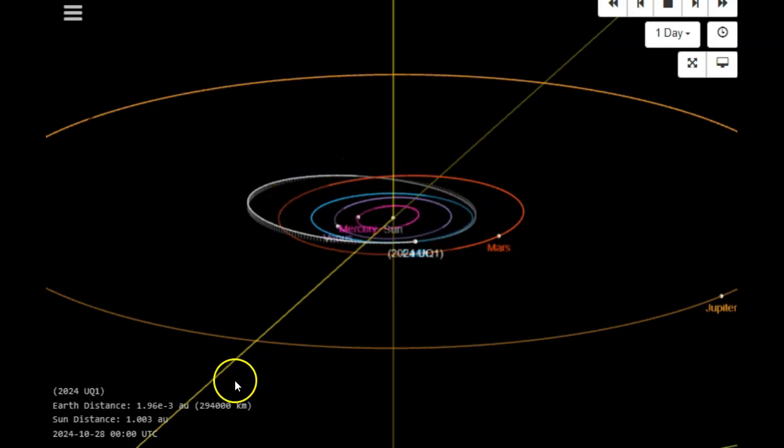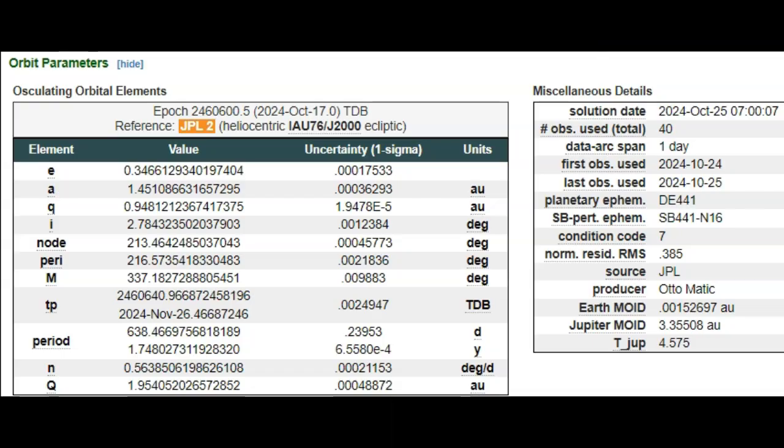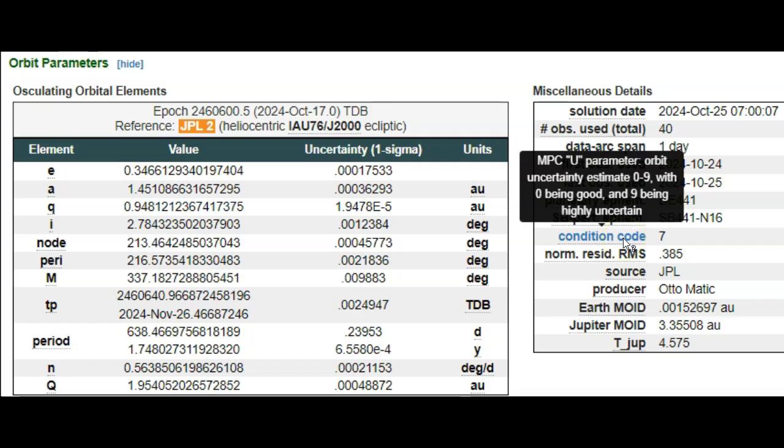Basically an inner solar system rock or near-Earth object, just as most of them are. Now let's get some additional details on this space rock, starting off with our orbit parameters here. You can see the solution data, in fact, is today, the 25th, trying to get things to y'all as soon as they're available. Looks like they only spotted this rock yesterday on the 24th. One day of observations, they have had 40 observations.